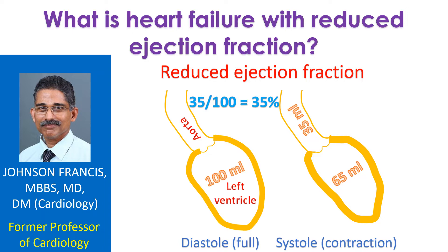Ejection fraction is the fraction of the blood ejected out from the filled heart. The lower chambers of the heart fill when they relax after a contraction. As an example, if the left ventricle, the lower left chamber, has 100 ml of blood after filling and 35 ml is ejected out during the next contraction, the ejection fraction is 35%.